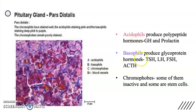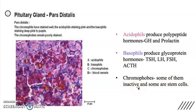They stain well. But chromophobes, the third group, do not hold the stain — they stain poorly. That's why we call them chromophobes: phobia means fear. Some of them are inactive and have already lost their granules, and some act as stem cells.